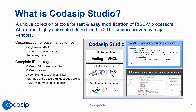We also have an SDK generator based on LLVM. If you add new instructions, the LLVM compiler is aware of them and emits them automatically — no need to change the C code. You get all the low-level tools: assembler, linker, simulators, and profilers — all generated by Studio. Last but not least is verification: Studio generates a UVM-based environment including tests that stress the added instructions, providing high coverage for MAC or bit manipulation instructions for example.